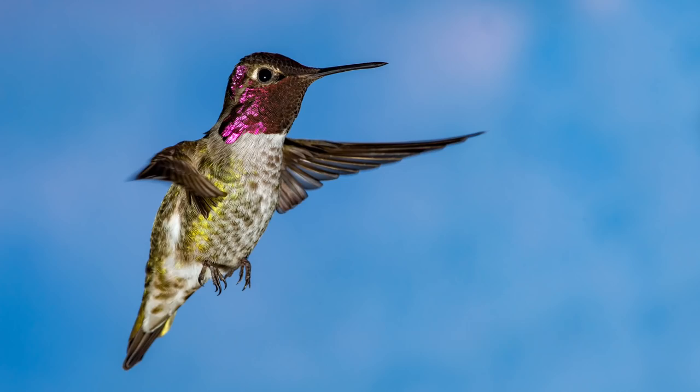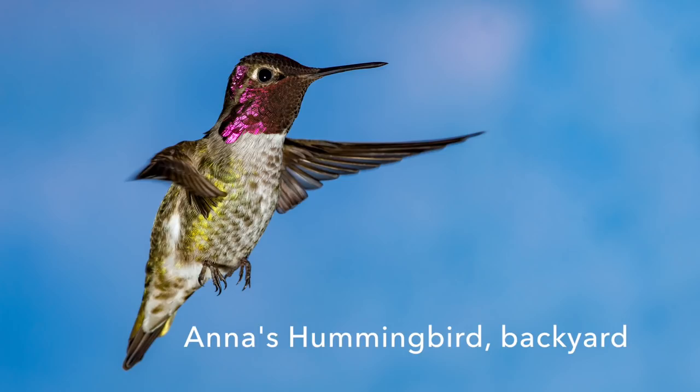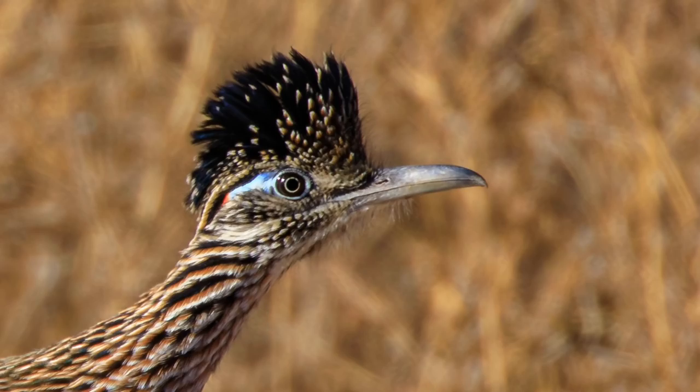You can do the walk-around approach by walking around a pond or driving around an auto tour route. You can do the target bird approach by setting up a bird feeder in your backyard and targeting the different species that might show up, or by using your car as a blind at a national wildlife refuge — specifically going after a roadrunner shot or a kestrel shot.